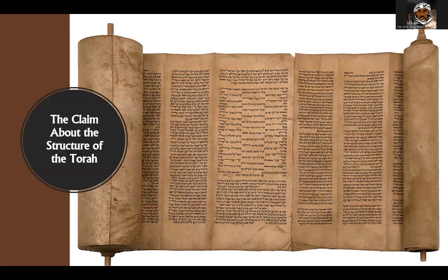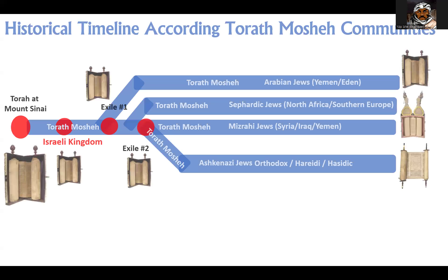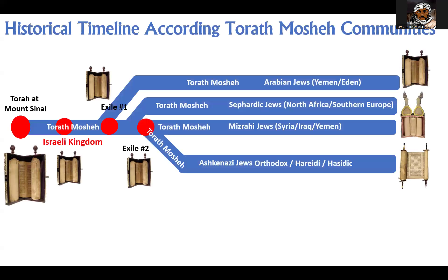So the claim about the structure of the Torah — we have to look and say, who claims that there are five books of Torah? Who claims that the Torah is Bereshit all the way to Devarim? This claim comes from all the communities you see here — ancient Jewish communities that have been separated by exile going back more than 2,500 years into different regions who, when brought back together about 100 years ago or so, have the same Torah text.